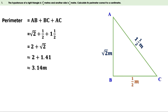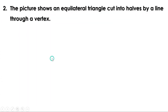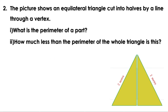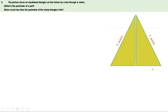Now let us do the remaining problems on page 52. The picture shows an equilateral triangle cut into halves by a line through a vertex. What is the perimeter of one part? Since it is an equilateral triangle, all sides are 2 meters. Since it is cut into two halves, the base of the small triangle is 1 meter. Let us name the small triangle ABC and find the length of BC.